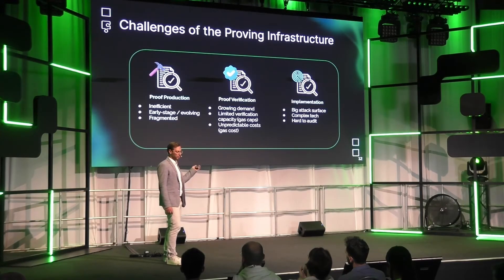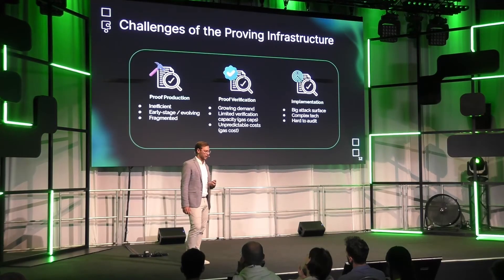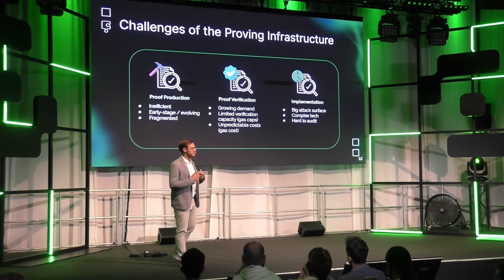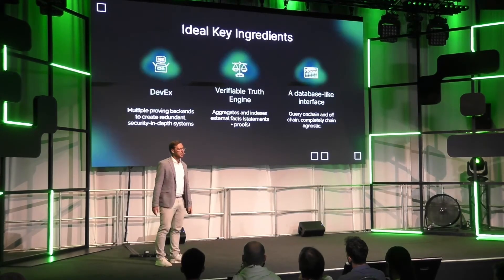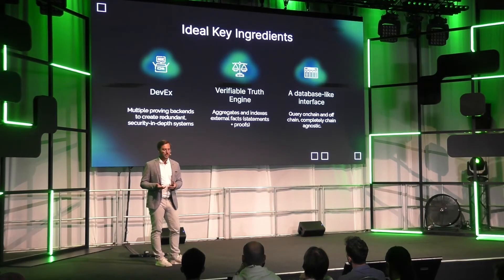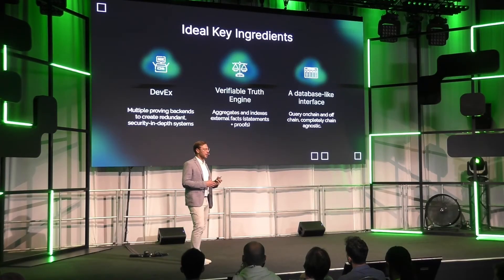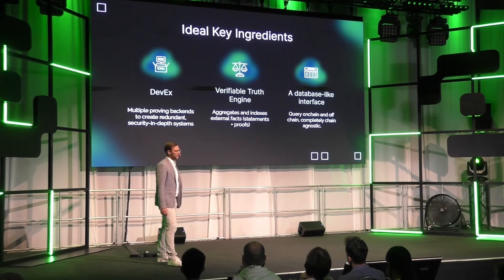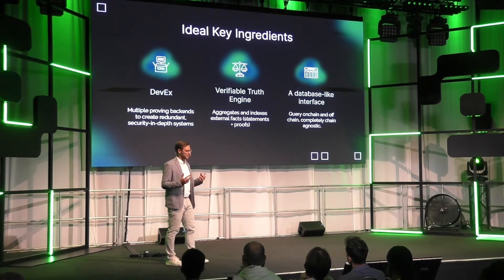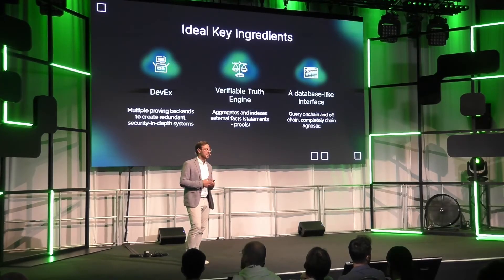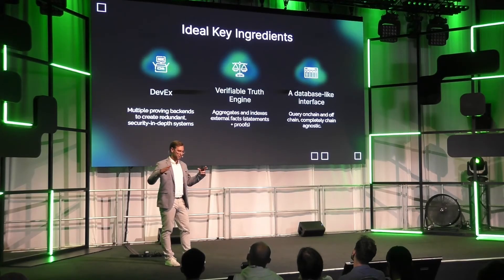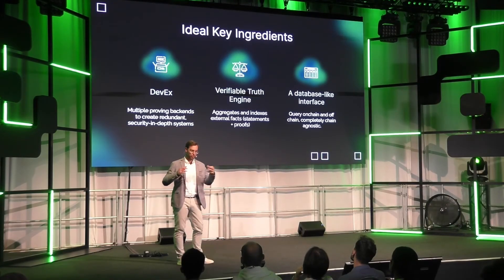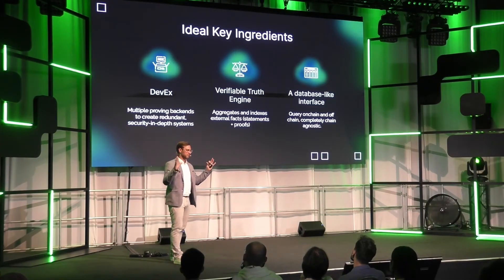How can we solve all these problems — complexity, high costs, and zero-knowledge proof algorithms understood by very few? We think different new ingredients are needed, ingredients that we and other teams are experimenting with. By putting these efforts together, we can create a superior system. One ingredient is retaining redundancy of proofs and security in depth — a system that can include proofs of various kinds, not just zero-knowledge proofs but also TEE proofs and others.